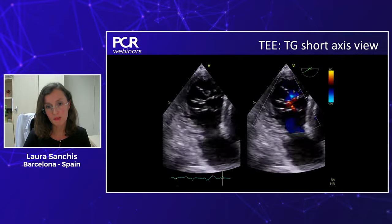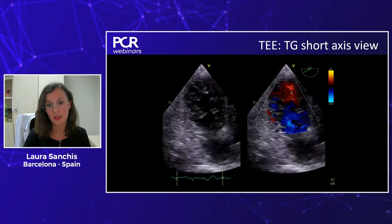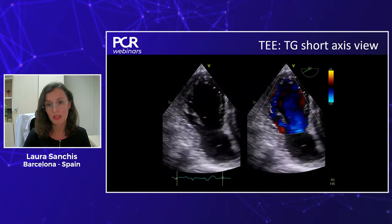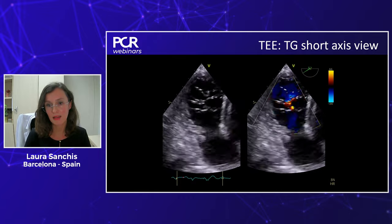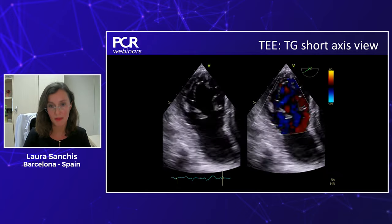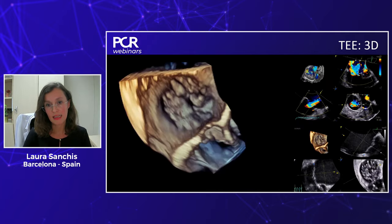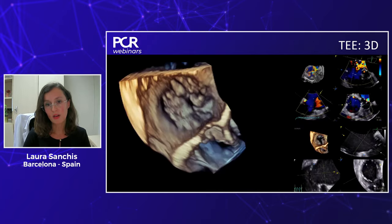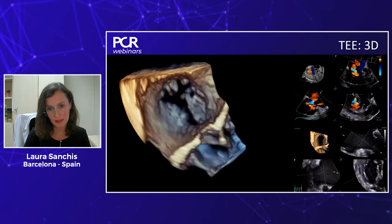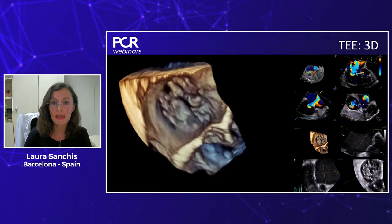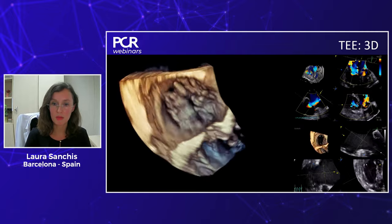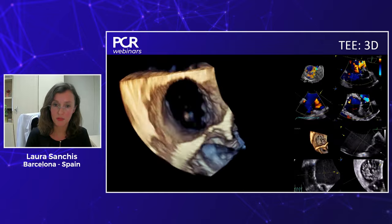The second most important TOE view is the transgastric short axis view — this is where you can see all three leaflets nicely and know the morphology of the tricuspid valve. Sometimes you also have very nice 3D imaging of the valve, but this is not possible in all patients, so you need to rely on the transgastric short axis view for anatomy.